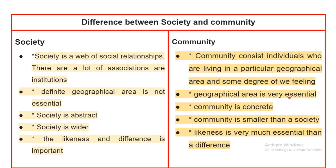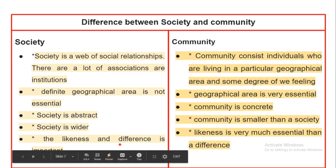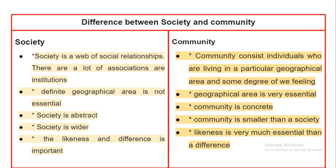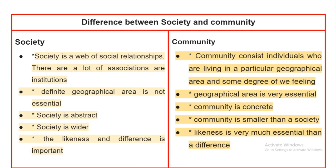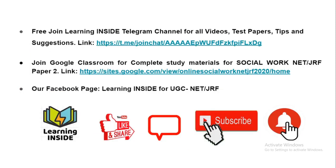A definite geographical area is not essential for society, but in community a definite geographical area is very important. Society is abstract while community is concrete. Society is wider, and community is smaller — two or three communities may make up one society. In society, both likeness and differences are important; in community, likeness is far more essential than difference, because without likeness there cannot be a community.